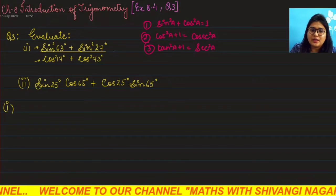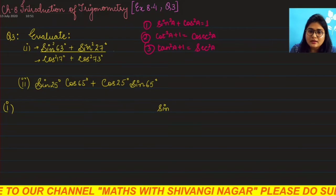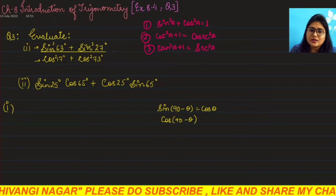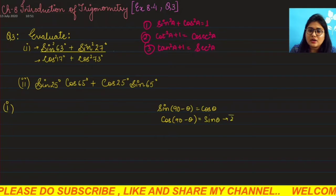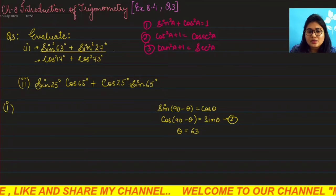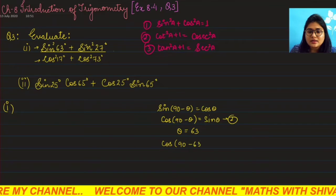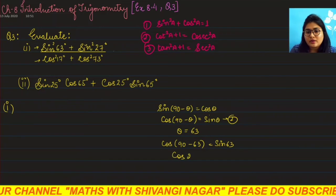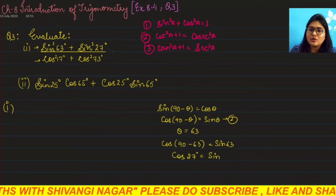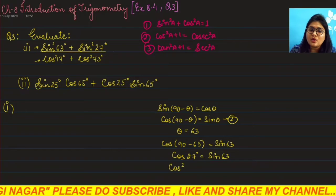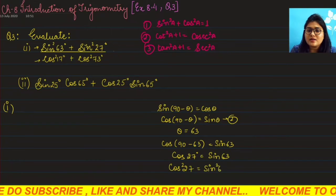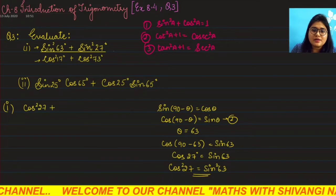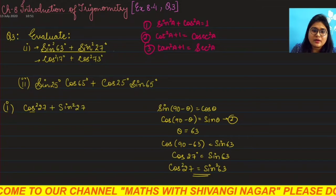We know that sin(90 - θ) = cosθ and cos(90 - θ) = sinθ. Using the second formula and putting θ = 63: cos(90 - 63) = sin63, so 90 - 63 = 27, meaning cos27 = sin63. Squaring both sides: cos²27 = sin²63. Substituting this in the numerator, we get cos²27 + sin²27 in the numerator.